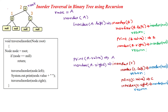So three nodes are there. A is the root, B is the left child to the root, and C is the right child to the root. B is not having children, so I have mentioned with null values, and C also does not have children, so I mentioned with null values.